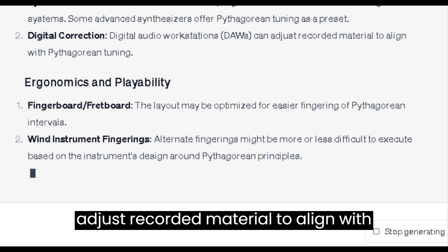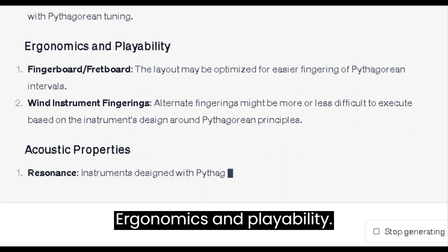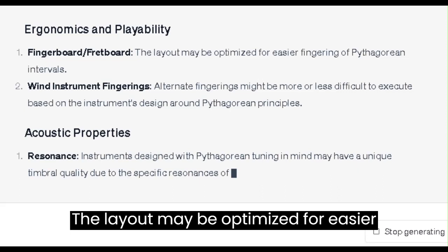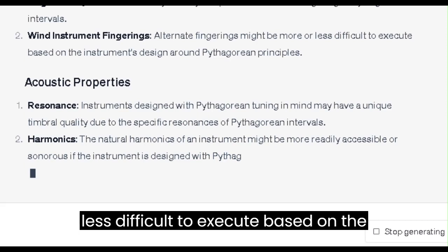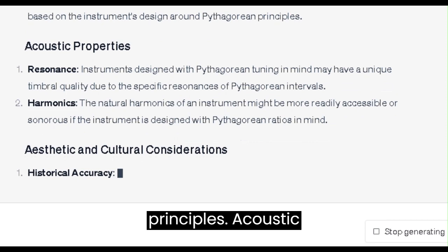Ergonomics and Playability: 1. Fingerboard/Fretboard. The layout may be optimized for easier fingering of Pythagorean intervals. 2. Wind Instrument Fingerings. Alternate fingerings might be more or less difficult to execute based on the instrument's design around Pythagorean principles.